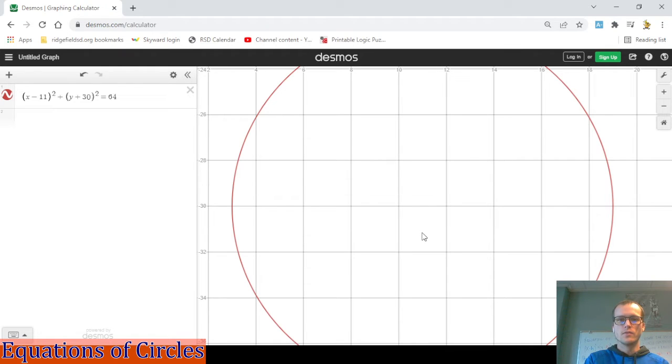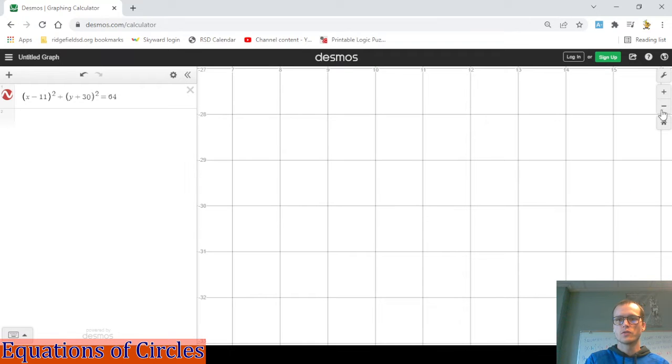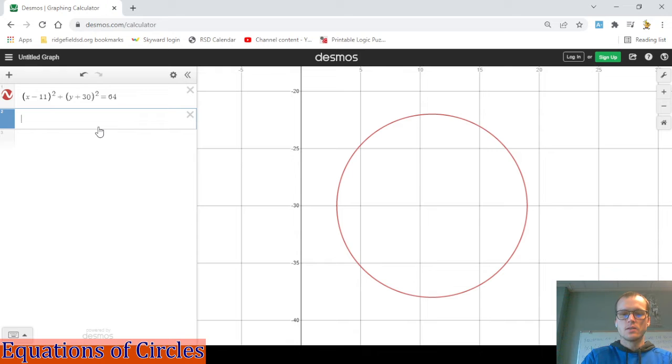If we go straight down to (11, -30), our claim is that the center of our circle is right there. Let's, for funsies, let's type in (11, -30) as a point. And that indeed looks like the center of our circle. Cool.